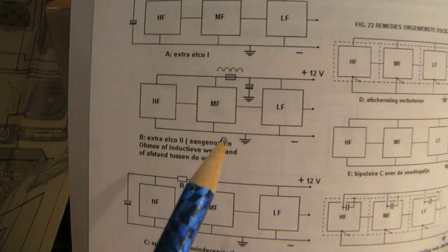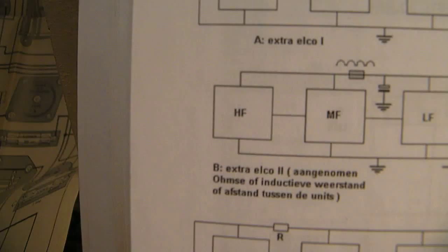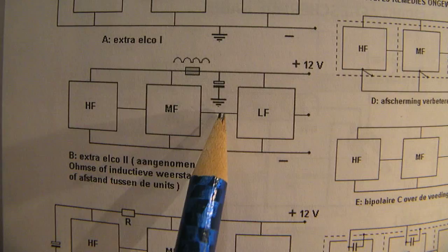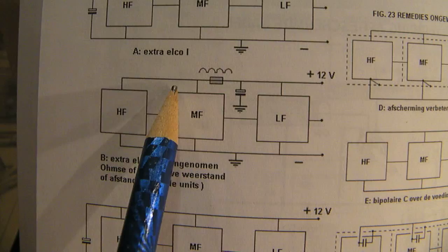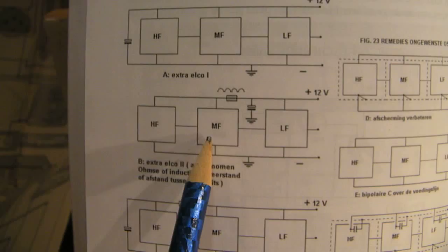Second remedy. The second remedy is to make a kind of decoupling circuit. So this is the high frequency stage, the medium frequency stage, and also here the low frequency stage. Decouple the high frequency stage and the medium frequency stage with the help of a capacitor.